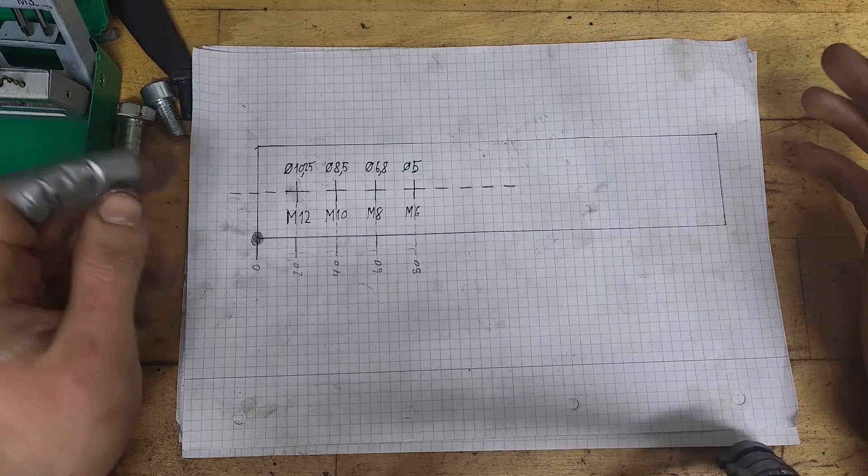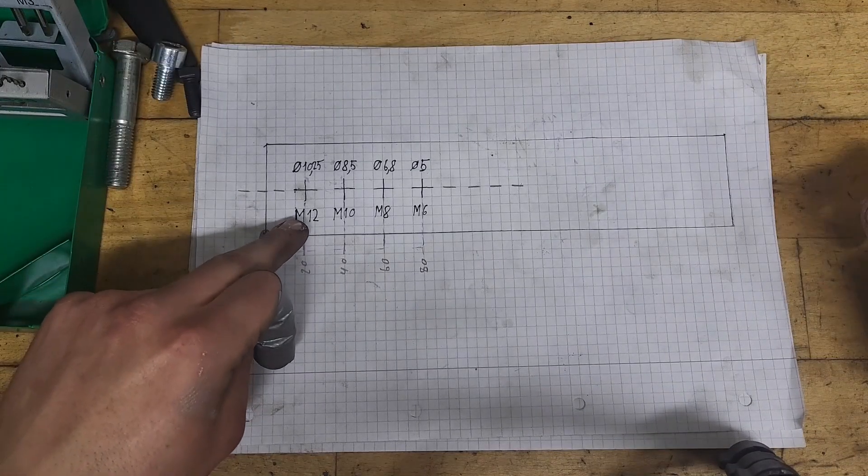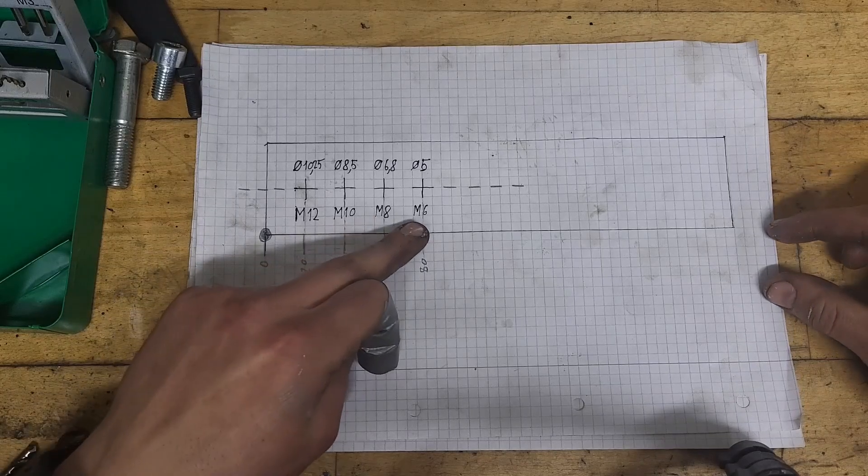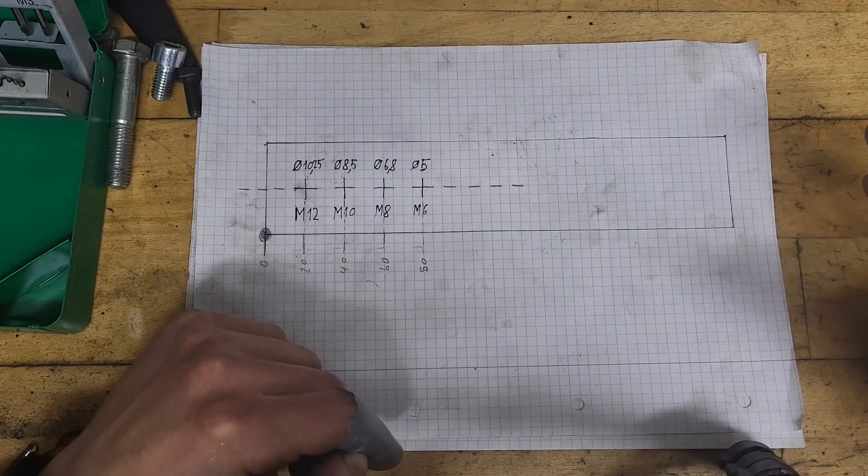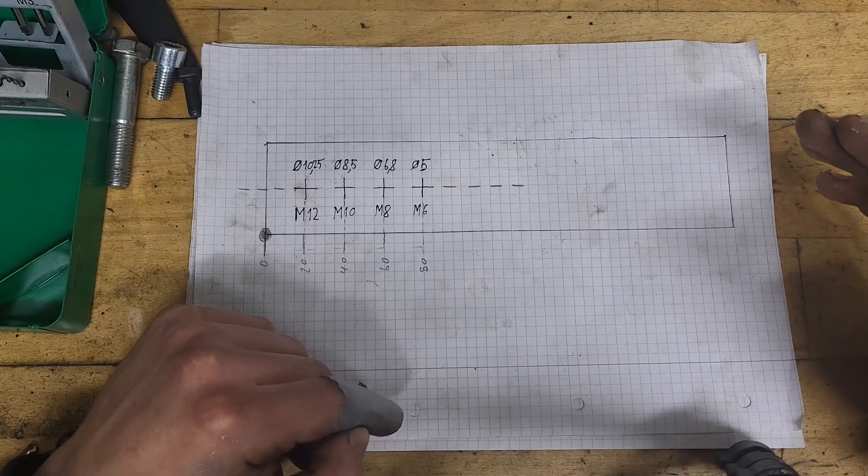As you might have noticed, all my measurements are in metric. This means that these thread dimensions are also metric. And the good thing about that is that metric threads are quite easy to understand.